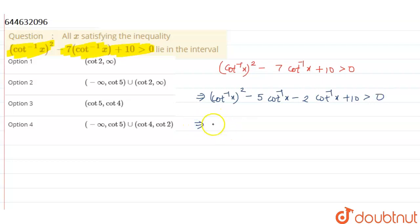So from the first two terms we can take common cot⁻¹x. So the remaining is (cot⁻¹x - 5). From the last two terms we can take common -2. So the remaining is (cot⁻¹x - 5) is strictly positive. So this gives (cot⁻¹x - 5)(cot⁻¹x - 2) is strictly positive.